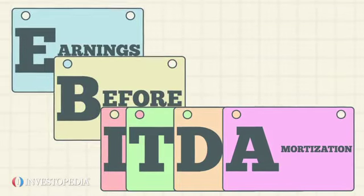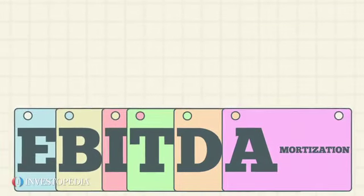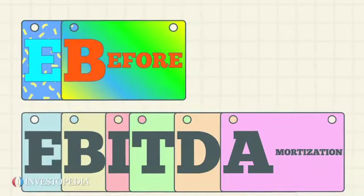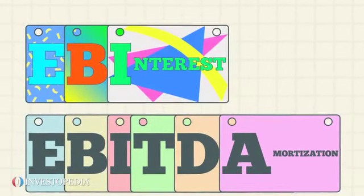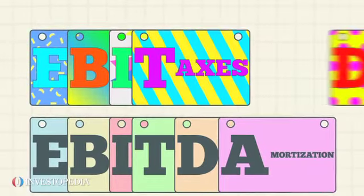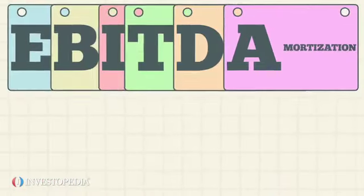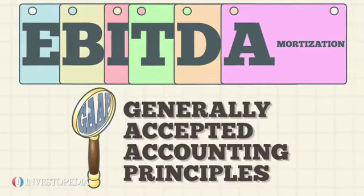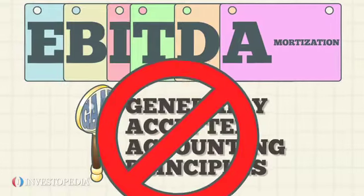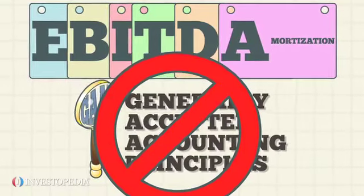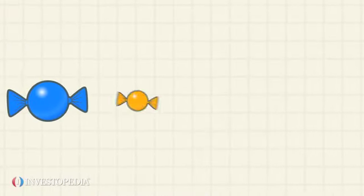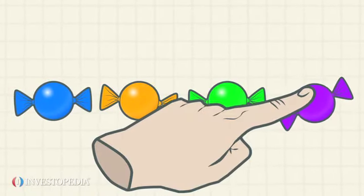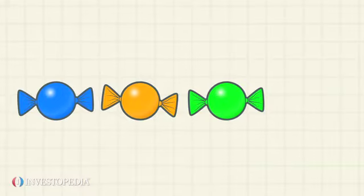EBITDA was first used in the 1980s with leveraged buyouts to help determine a company's ability to service debt. Today, EBITDA is used as a non-GAAP metric that allows companies to include or exclude certain items at their own discretion.